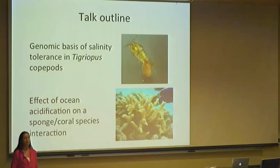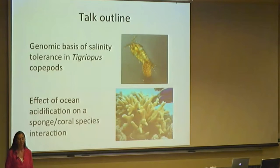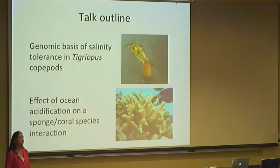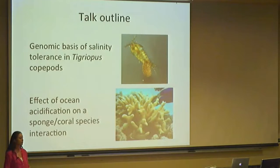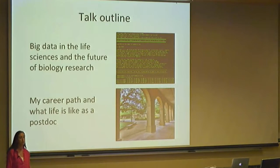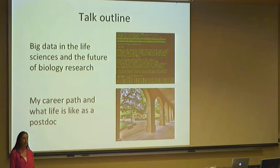The two projects I'm working on in the Kelly Lab right now are trying to understand the genomic basis of salinity tolerance in tigriopus copepods, and the effects of ocean acidification on a sponge-coral species interaction. I'm using different kinds of experiments and transcriptomic data to get at these questions. I'll also talk about how data collection and analysis has changed in the last five or six years, and end with information about my career path and what it's like to be a postdoc in biological sciences.